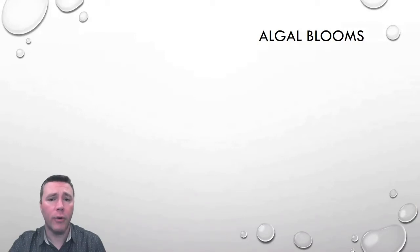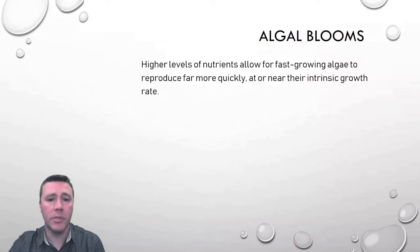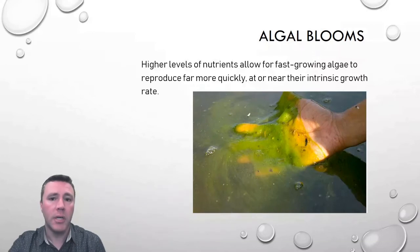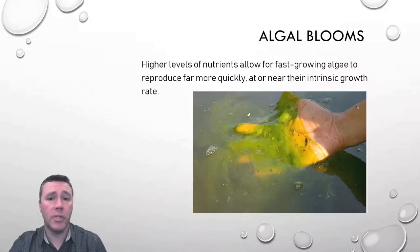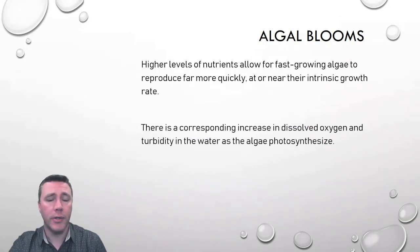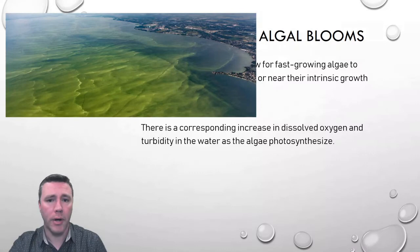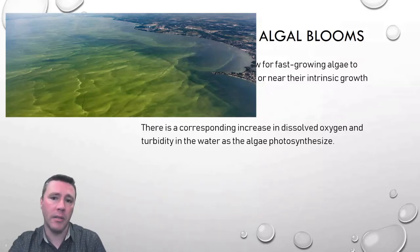As we saw in the video, eutrophication — or the introduction of excessive nutrients — has the potential to cause some pretty serious consequences, beginning with algal blooms. Those higher levels of nutrients allow for fast-growing organisms like algae to sequester those nutrients so fast that they're able to grow near or at their intrinsic growth rate. As those algae grow and photosynthesize, there is an increase in the amount of oxygen in the water, but there's also an increase in cloudiness or turbidity. Depending on the amount of nutrients available and the temperature of the water, algal blooms can be quite extensive.